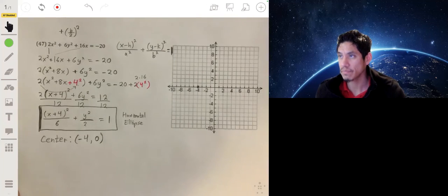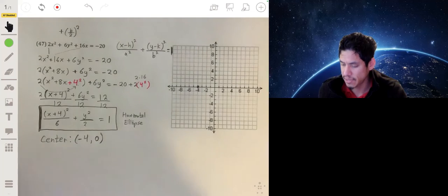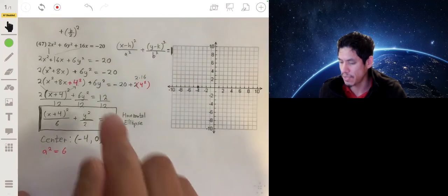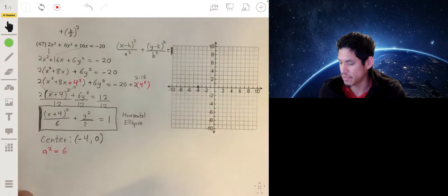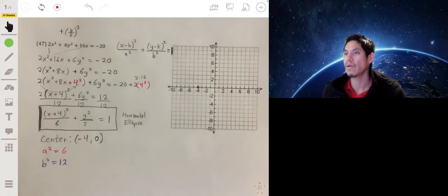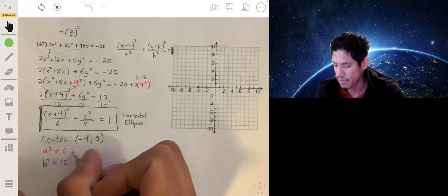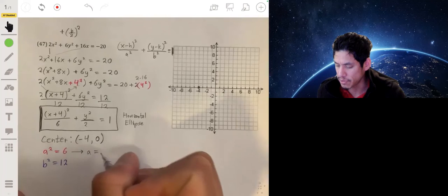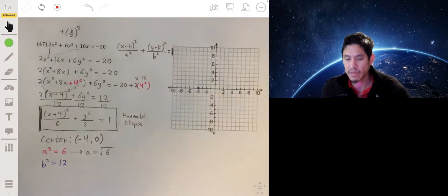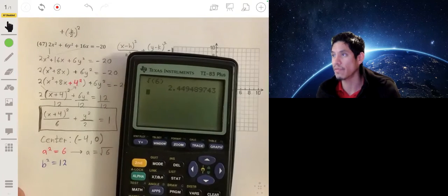Now a squared is equal to 6, so I need to figure out what the value of a is. So a is going to simply be the square root of 6, which will be about 2.45.